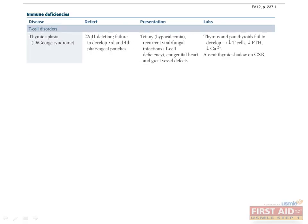DiGeorge syndrome, or thymic aplasia, results from the failure of the third and fourth branchial pouches to develop into a thymus. Children experience recurrent viral and fungal infections as a result of their T cell deficiency. These patients have characteristic faces, including cleft palate and often heart and great vessel defects. Failure of the fourth branchial pouch also results in absence of parathyroid glands, leading to hypocalcemia manifesting in tetany. This condition results from a deletion at chromosome 22q11. The mnemonic CATCH-22 covers its manifestations: Cardiac anomalies, Abnormal faces, Thymic aplasia, Cleft palate, and Hypocalcemia/hypoparathyroidism.